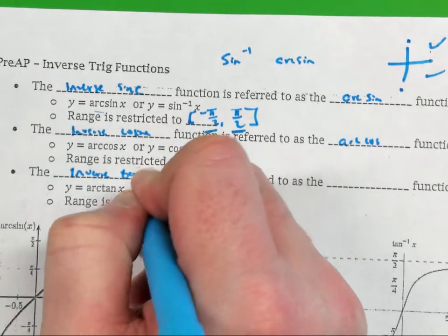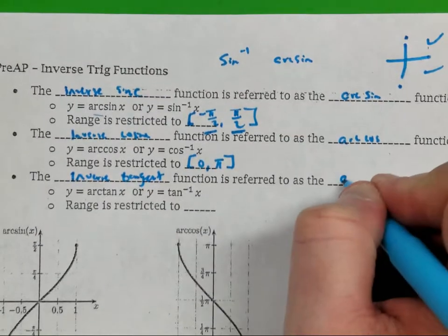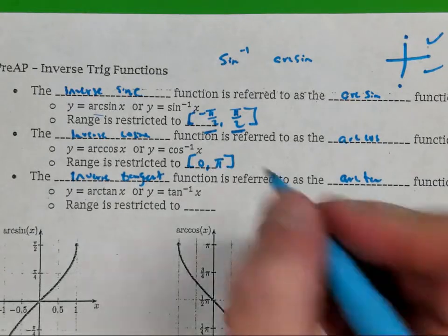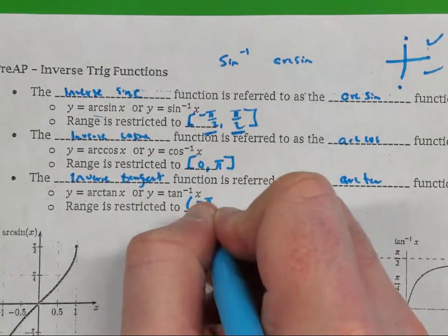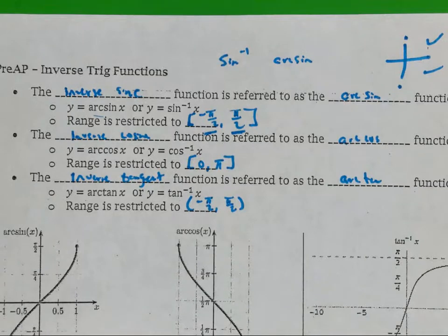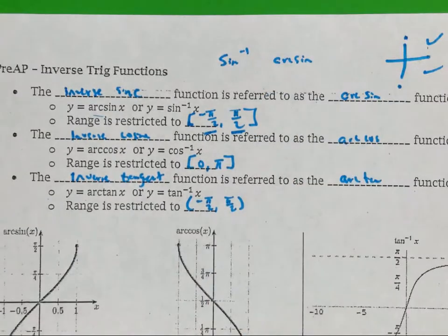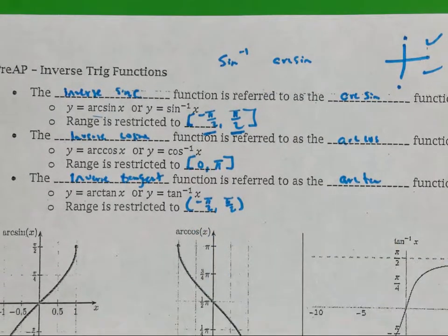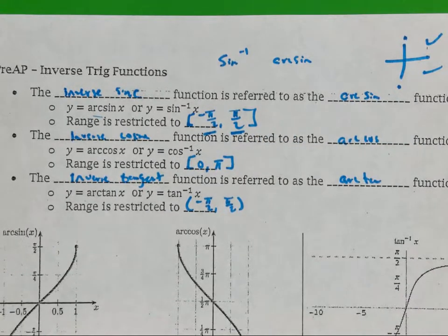The inverse tangent function is referred to as arctangent, and it is restricted to the same quadrants as sine — one and four. But notice I put parentheses around the endpoints for tangent, so those two values cannot be your answer. For sine they can be, but not for tangent.